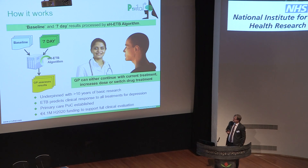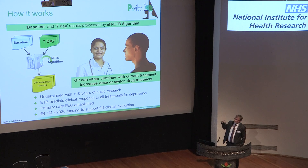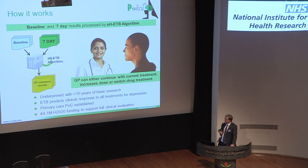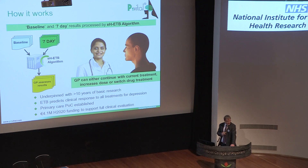This is underpinned by years of basic and clinical research at Oxford. We've shown the emotional bias test predicts clinical response for a wide variety of antidepressants. Earlier this year we conducted a primary care proof of concept demonstrating about 80 percent accuracy in predicting non-response. We've just secured 4.1 million euros of European Commission Horizon 2020 funding for a large-scale clinical study across Europe — 600 depressed patients in a randomized control trial.